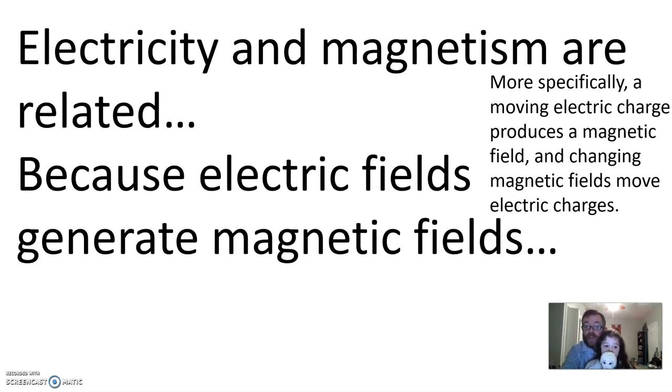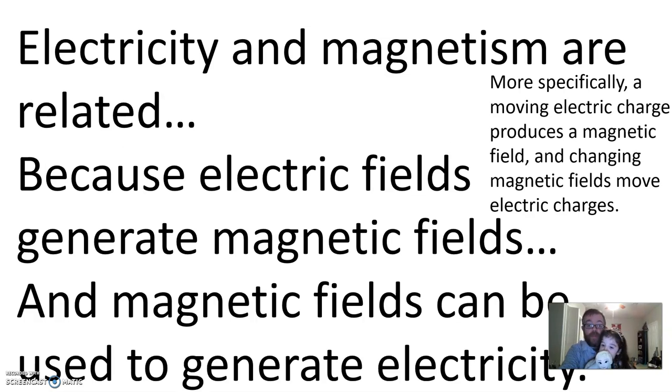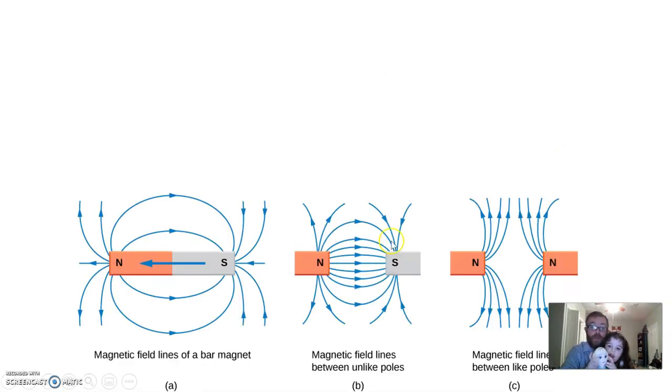Okay, you might have heard of an electromagnet. Magnetic fields can be used to generate electricity. So, more specifically, a moving electric charge produces a magnetic field, and changing magnetic fields move electric charges.